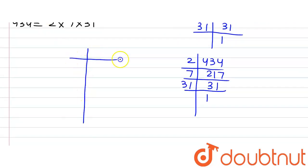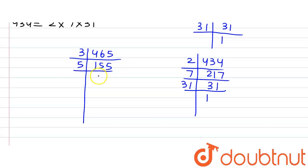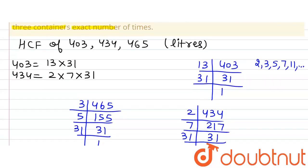Now for 465: it is not divisible by 2, but it is divisible by 3, giving us 155. 155 is not divisible by 3, but it is divisible by 5, giving us 31. Since 31 is a prime number, 465 = 3 × 5 × 31.